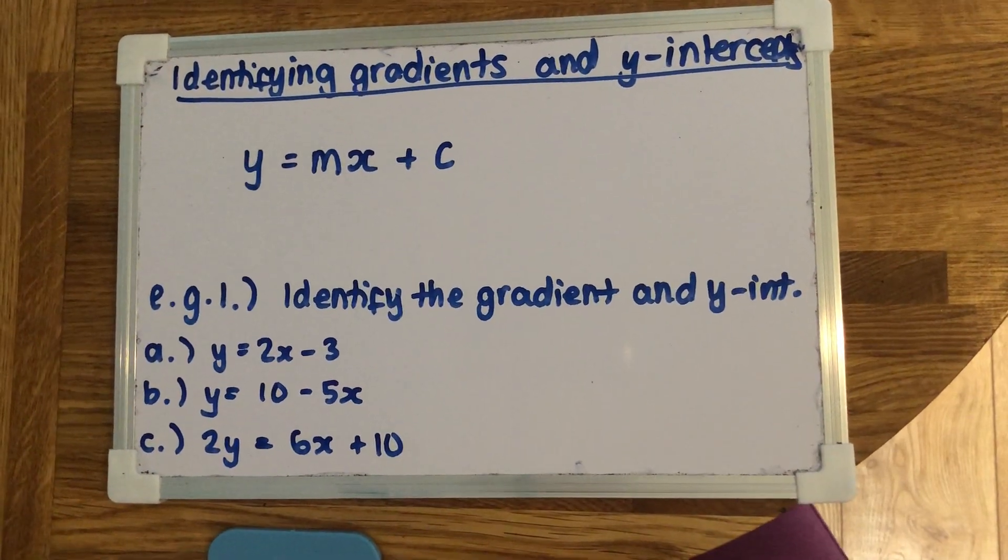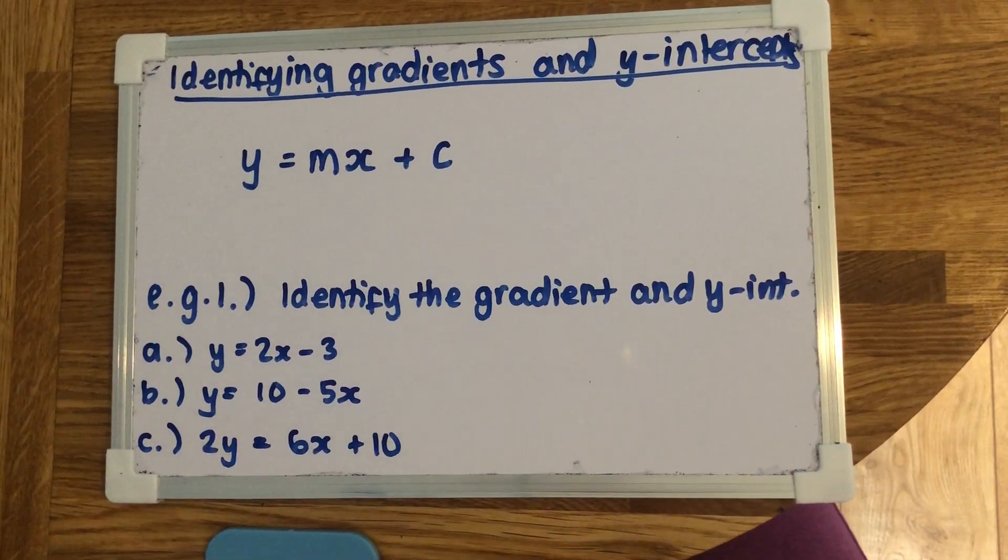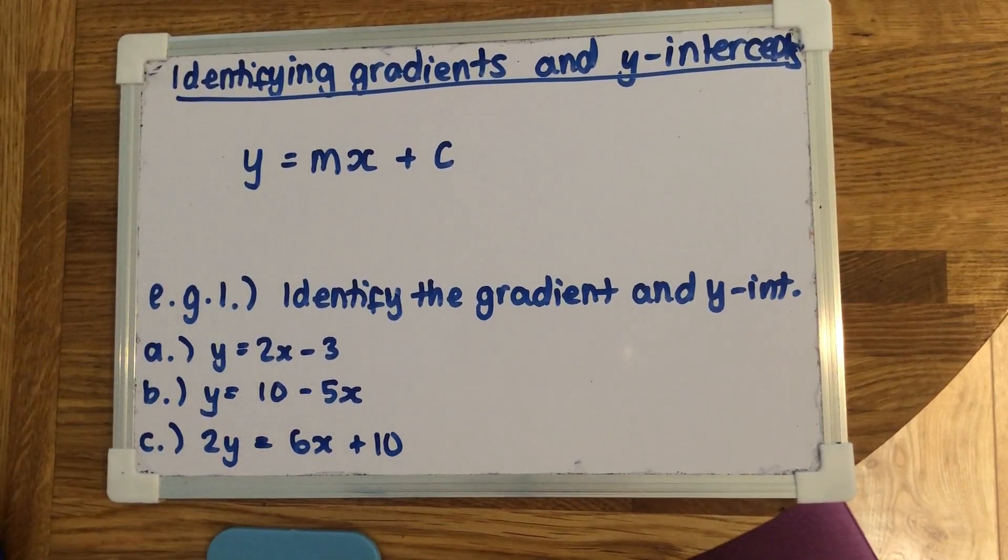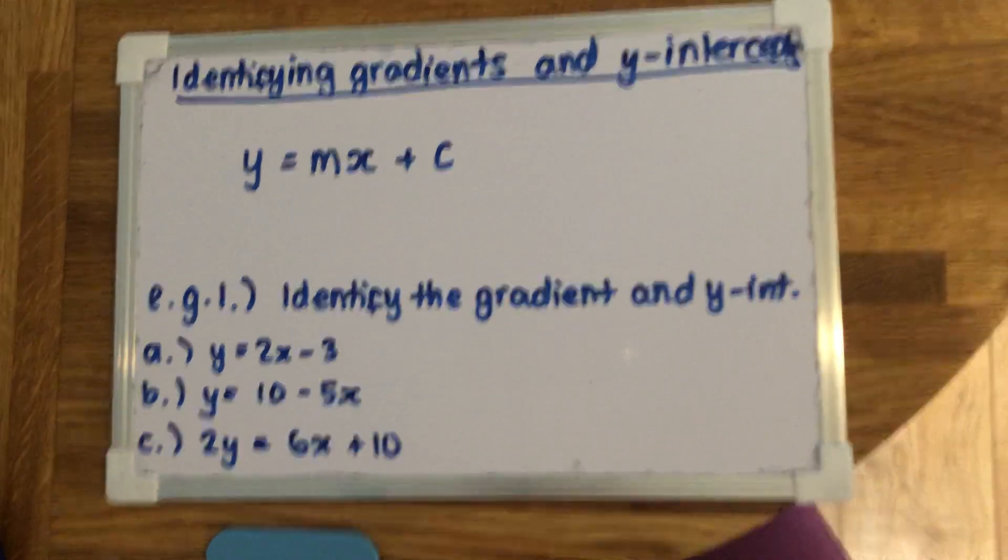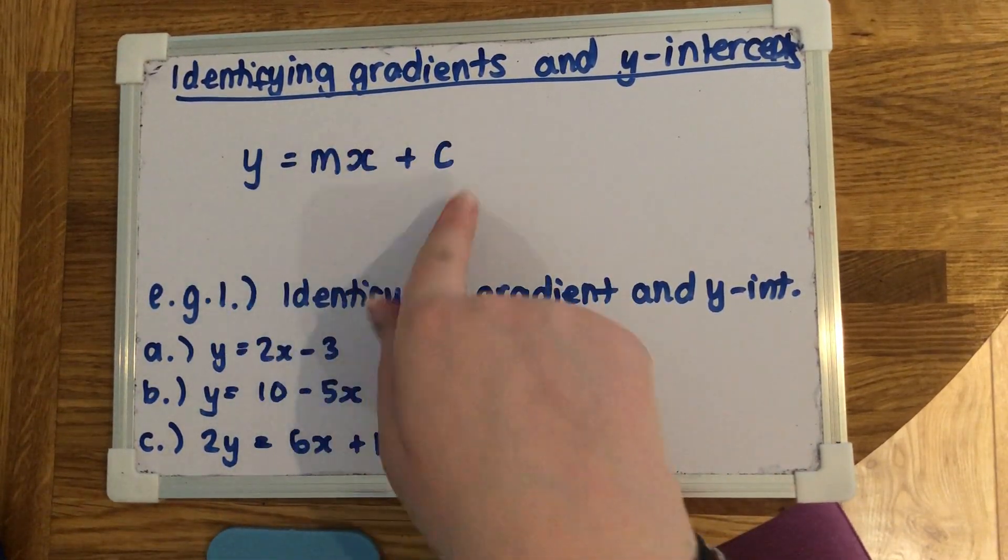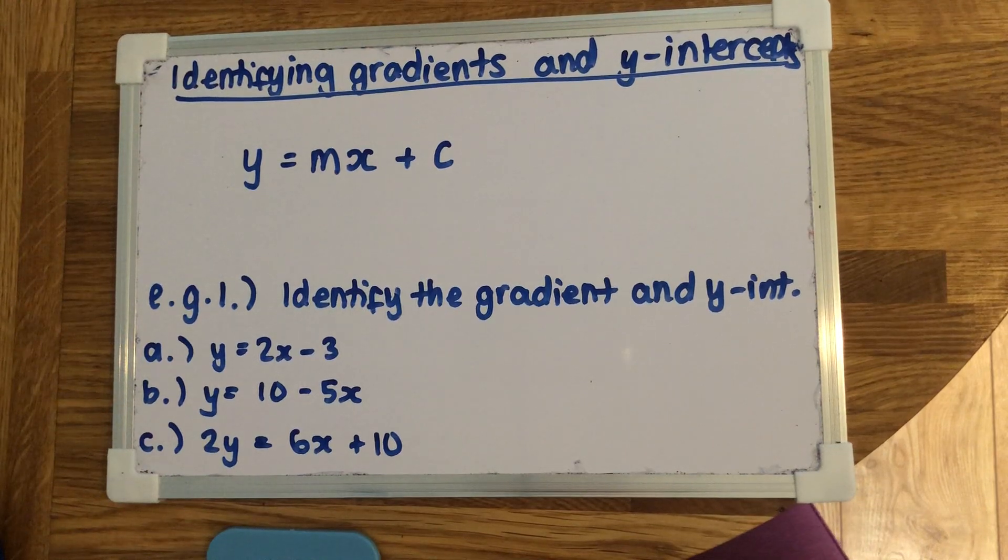So the next bit we're doing is actually understanding the equation of a linear line. There's parts of it that you need to remember. To start off with, every linear line has this formula: y equals mx plus c.